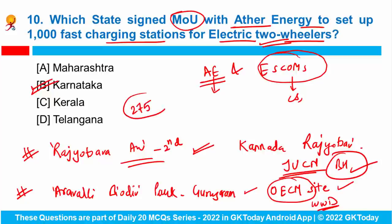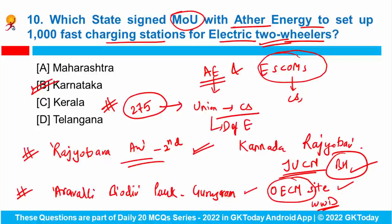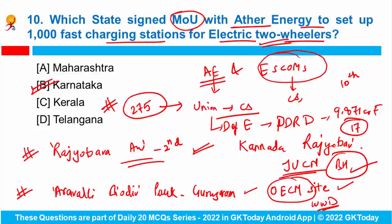Article 275 of the Indian Constitution is associated with which issue? It deals with grants from the Union to certain states. Recently, the Department of Expenditure under the Ministry of Finance released the monthly post-devolution revenue deficit grant of 9,871 crore rupees to 17 states. This was the 10th installment of the PDRD grant, provided to the states under Article 275 of the Constitution, as recommended by the Commission for a total of 17 states.